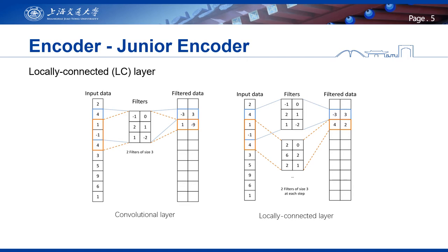First is the encoder component, which includes two parts: the junior encoder and the senior encoder. For the junior encoder in the synchronized scenario, we use the locally connected layer. This layer is quite similar to the convolutional layer except it does not share the filter weights among steps as it slides along the traces. We choose this layer because it decouples each neuron from the whole high-dimensional input, which is crucial to generate fine-grained features with high quality.